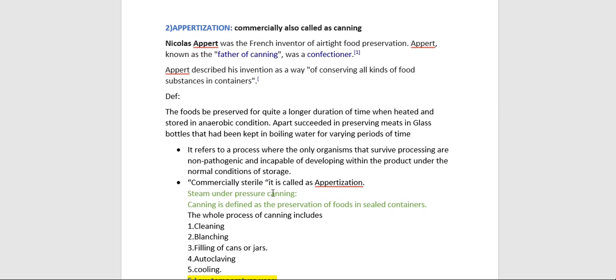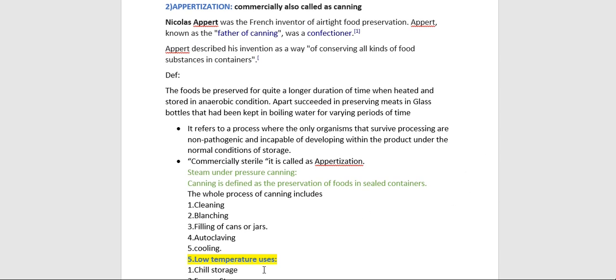That covers the first four types of methods of food preservation. The remaining methods will be covered in part two. Thank you.